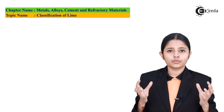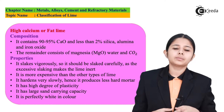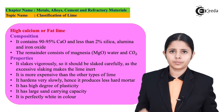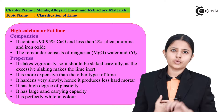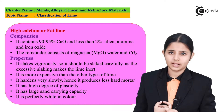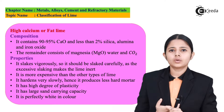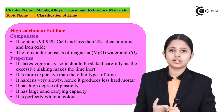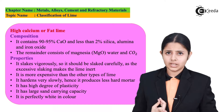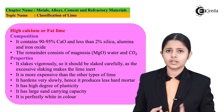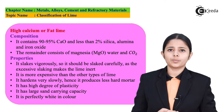On the basis of compositions of different materials present in lime, lime can be classified into several ways. The first is high calcium or fat lime. Second is poor calcium or lean lime. Third is hydraulic lime, which can be further classified into feebly hydraulic, moderately hydraulic, and eminently hydraulic. The fourth is dolomitic lime.